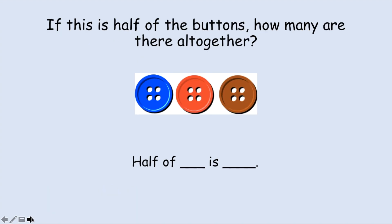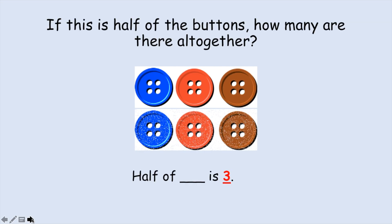If this is half of the buttons, how many are there all together? So this time we're not finding out what half of this group is. This is half. So if we have half already, we need to add the same amount because remember each part is the same. So here is one part and we need to add another part. Half of something is three, and we have added our next part which was exactly the same as the first, and we have one, two, three, four, five, six. Half of six is three.